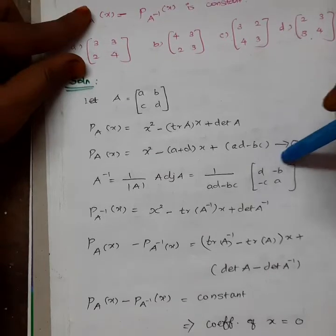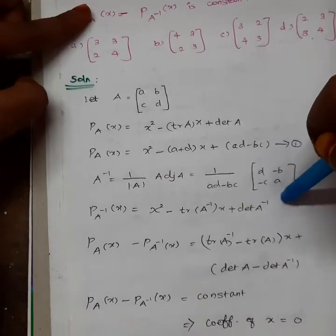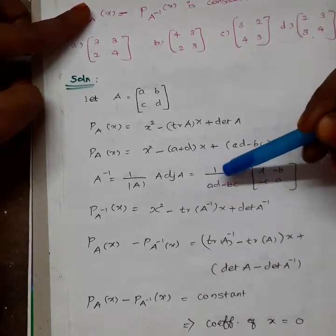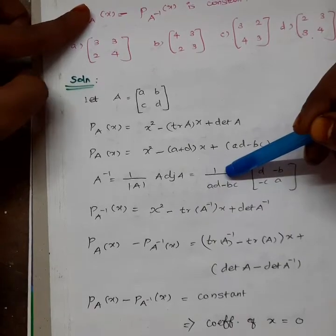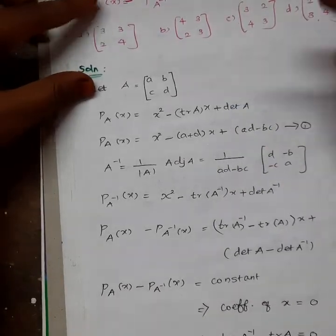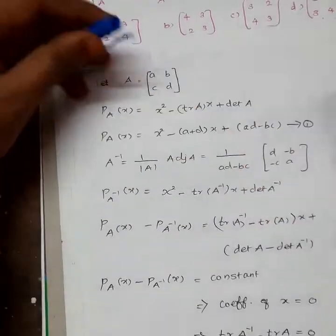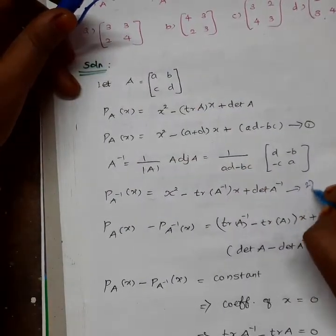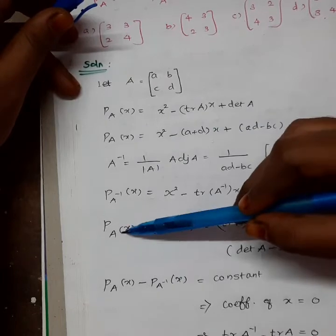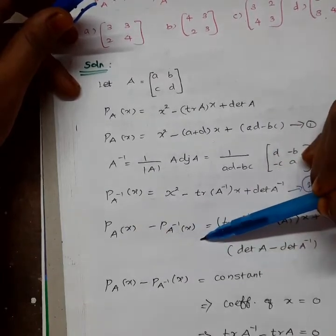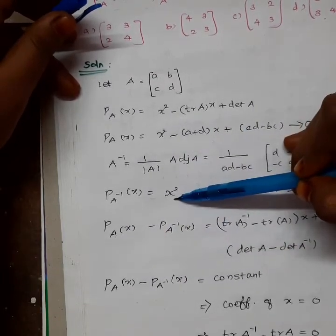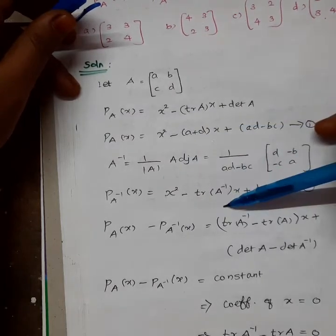So we have the characteristic polynomial of A inverse: PA inverse of X equals x squared minus trace of A inverse times x plus delta of A inverse. Now, PA of X minus PA inverse of X: the x squared terms cancel out, giving 0.